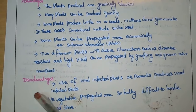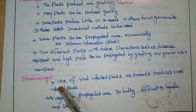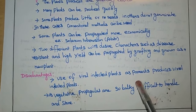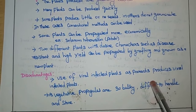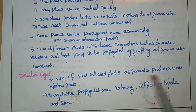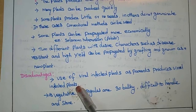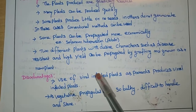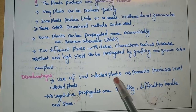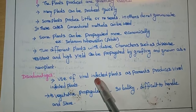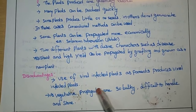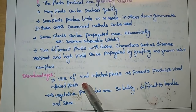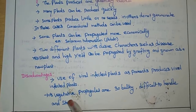Disadvantages: use of virally infected plants as parents produces virally infected offspring. When the mother plant is infected with a virus, the young ones will also have the same viral infection — that is the drawback.